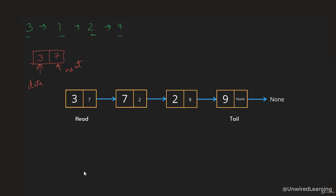The first element in a linked list is known as the head, and the last element is known as the tail. Some people also refer to the first element as 'start', which is fine. The flow of a linked list goes from left to right — starting at 3, the next element is 7 (that's 3.next), then 7.next is 2, and 2.next is 9. Since 9 is the last element (the tail), it has no next element — so it refers to None.